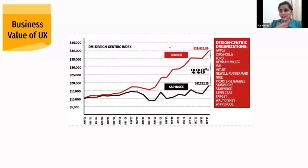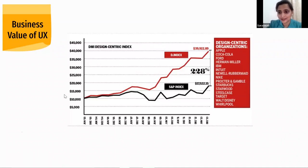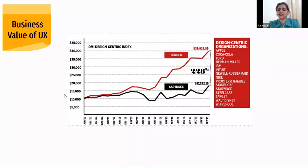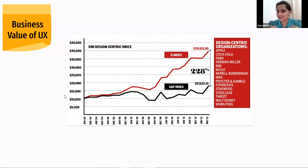There is research — both academic and from business magazines — that says design-centric organizations end up making a lot more money. This graph shows how design-centric organizations have performed versus the S&P index. The S&P is the American stock exchange's standard list of companies measured for performance year on year. Design-centric companies have performed 28% better in terms of revenue earned. I've linked these studies in the presentation — please refer to those articles.